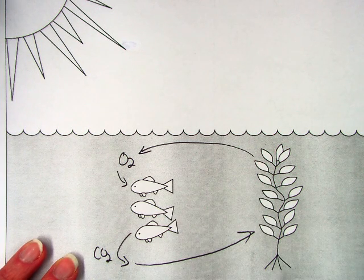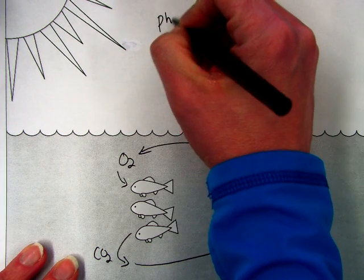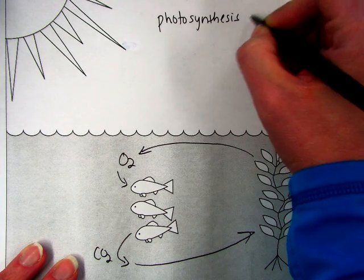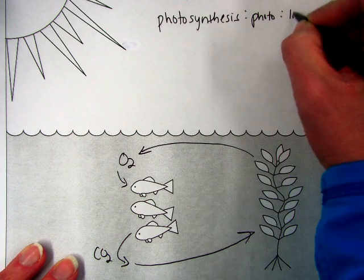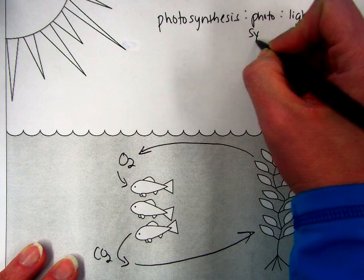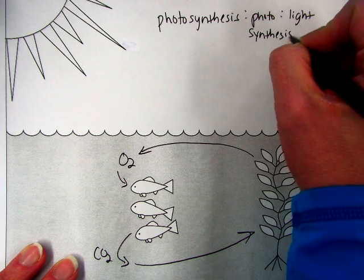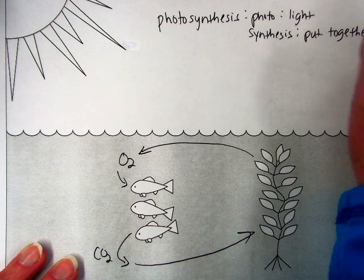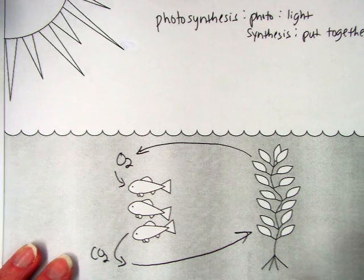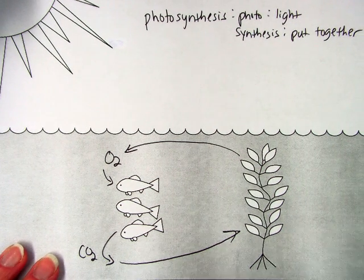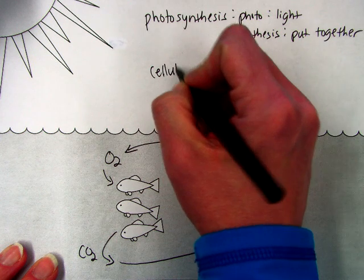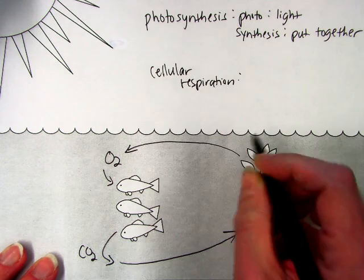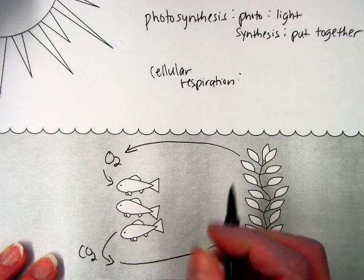So when we think about photosynthesis, photo literally means light and synthesis means to put together. So plants are literally putting together food molecules using light, and cellular respiration is the process by which all cells use those food molecules in order to produce energy.